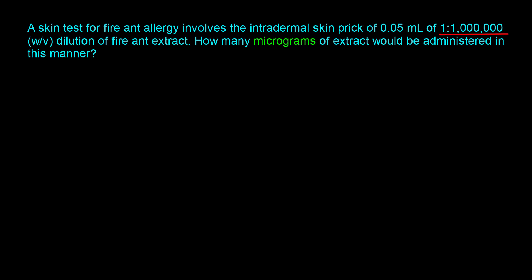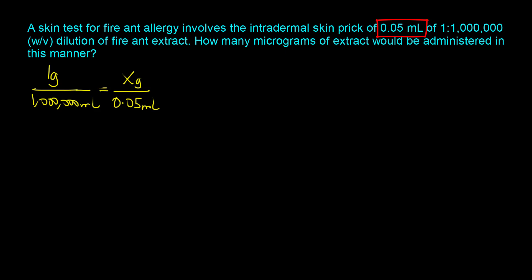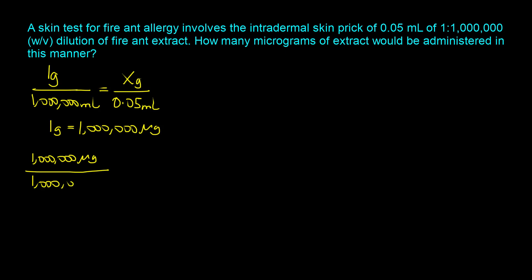The first thing we want to do is take the definition of ratio strength. Here it is 1 is to 1 million, which means you have 1 gram of fire ant extract in 1 million milliliters. Now because we want our answer in micrograms, we convert the grams to micrograms. The conversion states that 1 gram equals 1 million micrograms, so we can rewrite the ratio as: 1 million micrograms of fire ant extract in 1 million milliliters — that is the ratio strength expressed in micrograms.